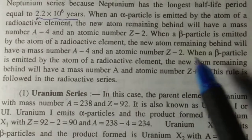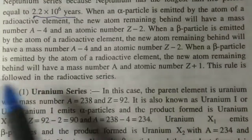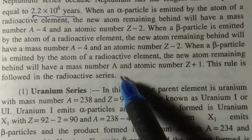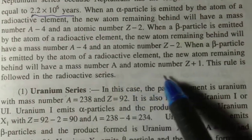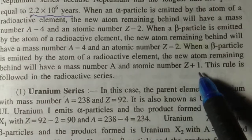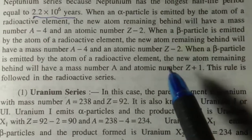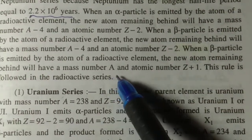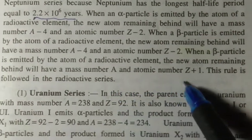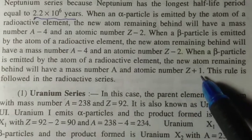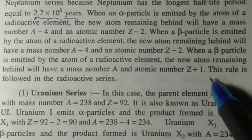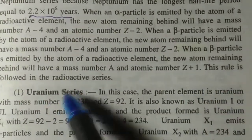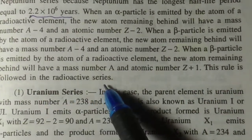When a beta particle is emitted by the atom of a radioactive element, the new atom remaining behind will have a mass number A and atomic number Z plus 1. Here we can see that mass number has no change and atomic number will increase. This rule is followed in the radioactive series.